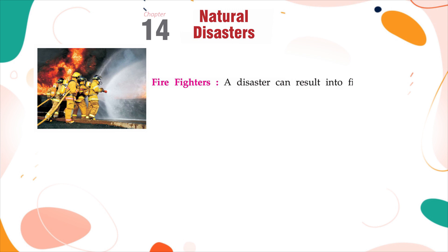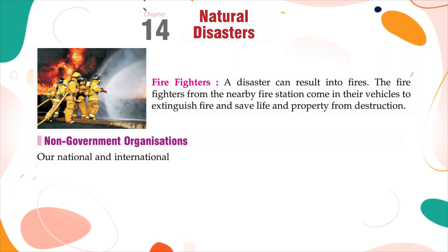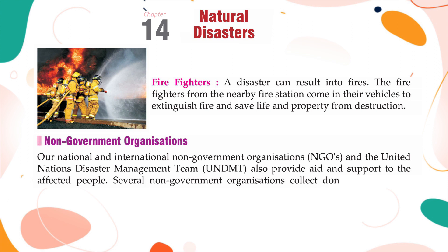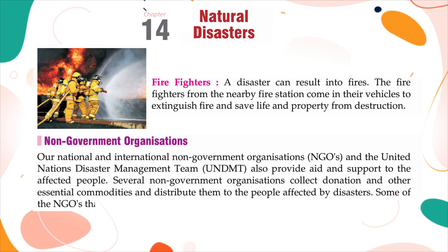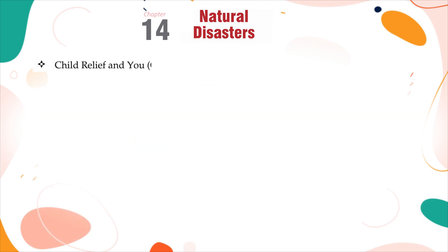Firefighters: A disaster can result in fires. Firefighters from nearby fire stations come in their vehicles to extinguish fires and save life and property from destruction. Non-Government Organizations: National and international NGOs and the United Nations Disaster Management Team (UNDMT) also provide aid and support to the affected people. Several NGOs collect donations and essential commodities and distribute them to disaster-affected people. Some NGOs that help include the Indian Red Cross Society, First-Hand Foundation, Child Relief and You (CRY), and Volunteers for Indian Development (VID).